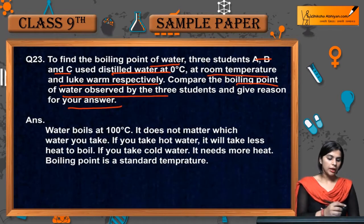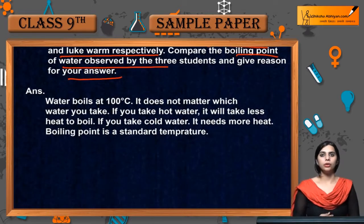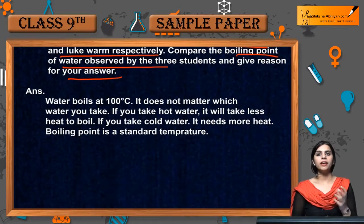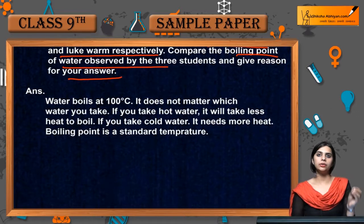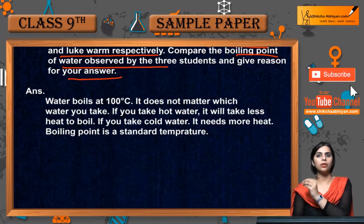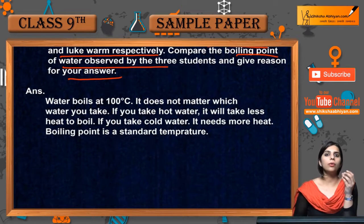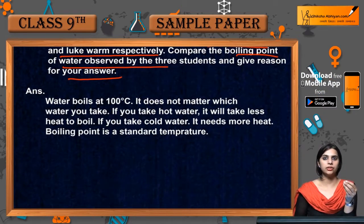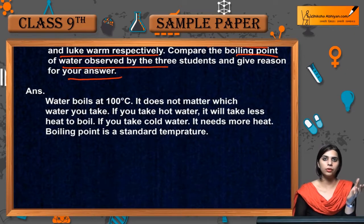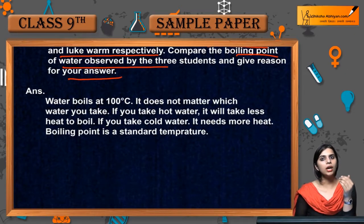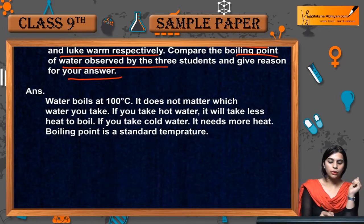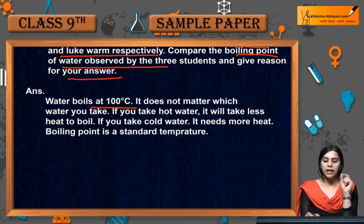Three students are using distilled water, the difference being they start at different temperatures: one at zero degrees, one at room temperature, and one with lukewarm water. The boiling point of water is 100 degrees Celsius. Any water — tap water, river water, ocean water — will boil at 100 degrees Celsius.